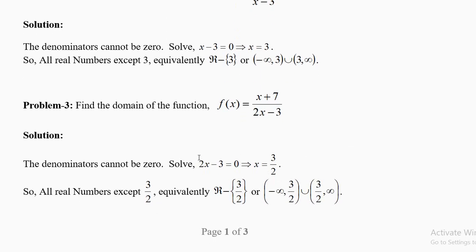Find the domain of f(x) = (x + 7)/(2x − 3). Division by 0 is not allowed, so set 2x − 3 = 0, giving x = 3/2. The domain is all real numbers except 3/2. We write ℝ − {3/2}, or in interval form: (−∞, 3/2) ∪ (3/2, +∞). The round brackets indicate 3/2 is not allowed.